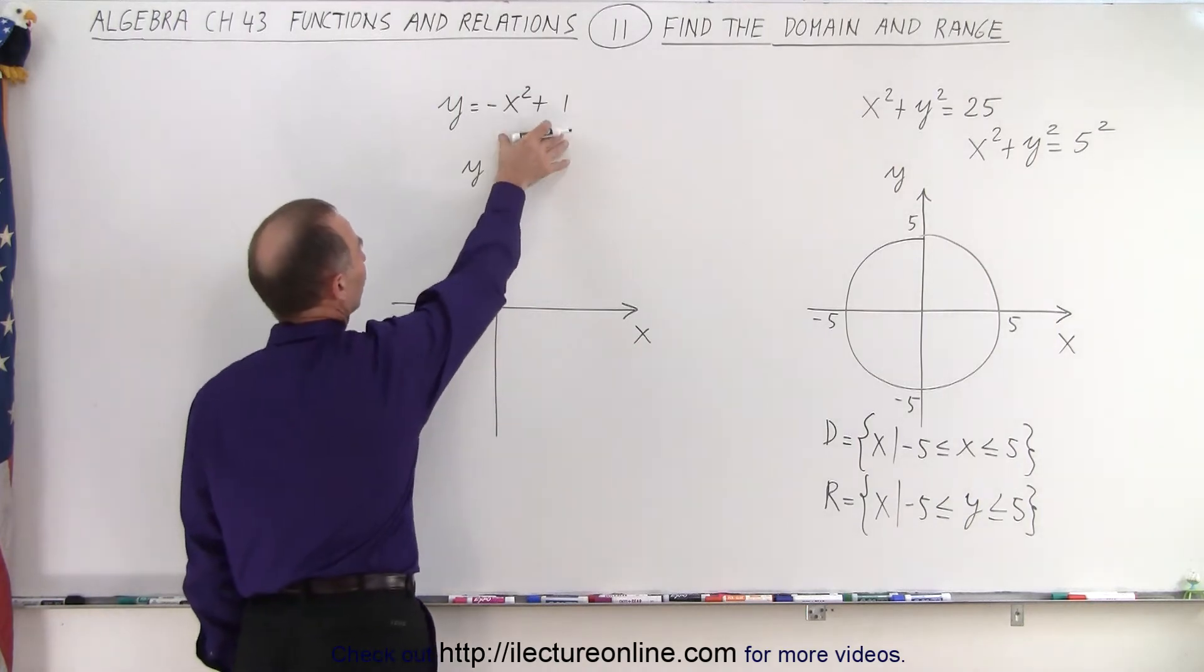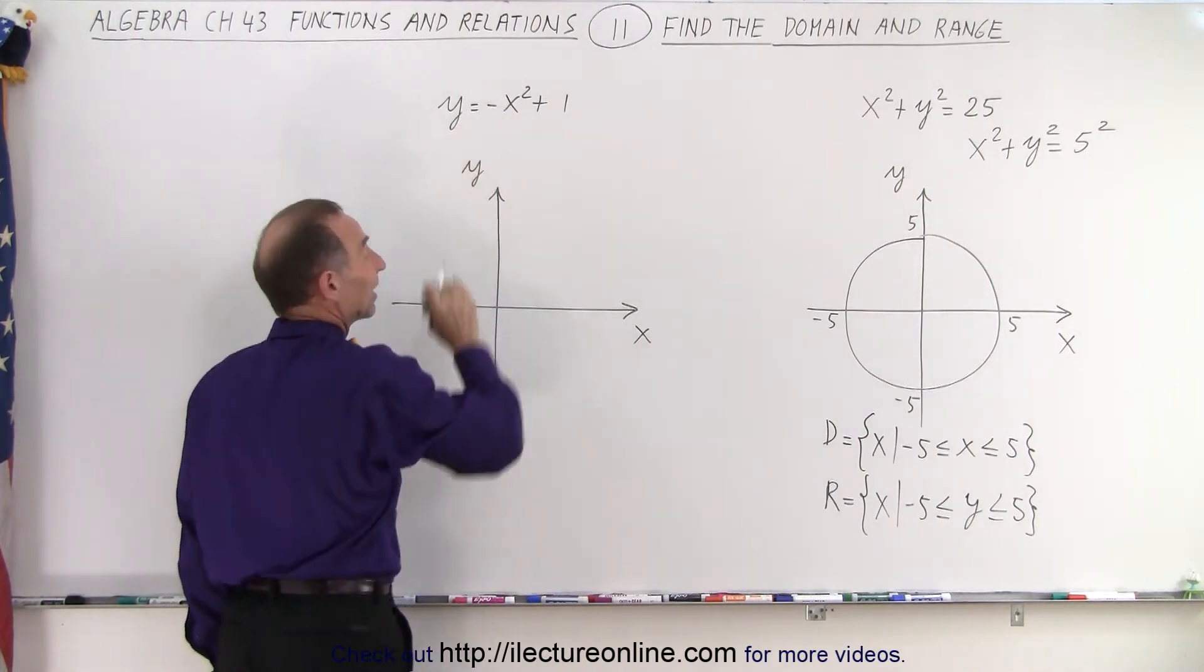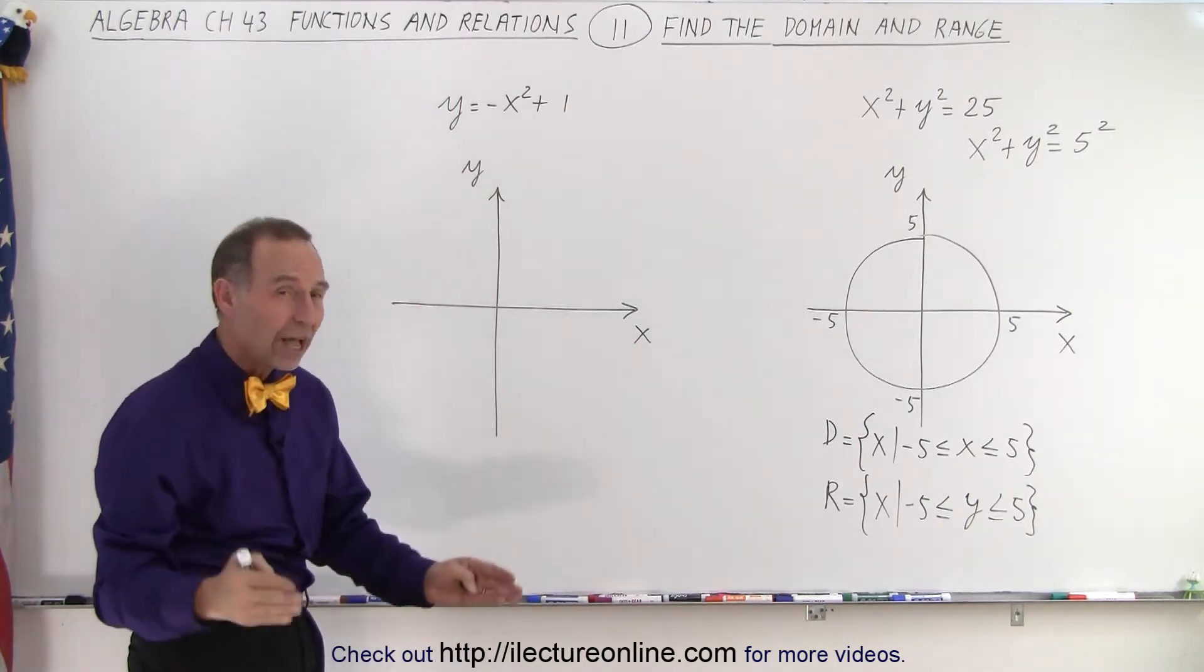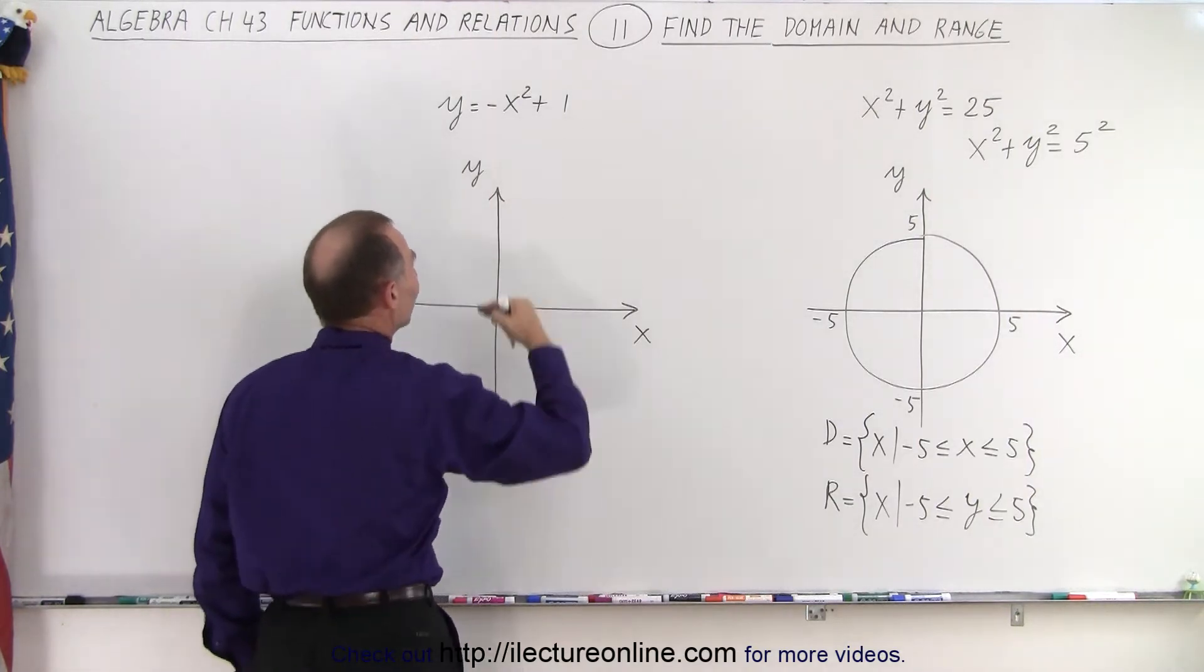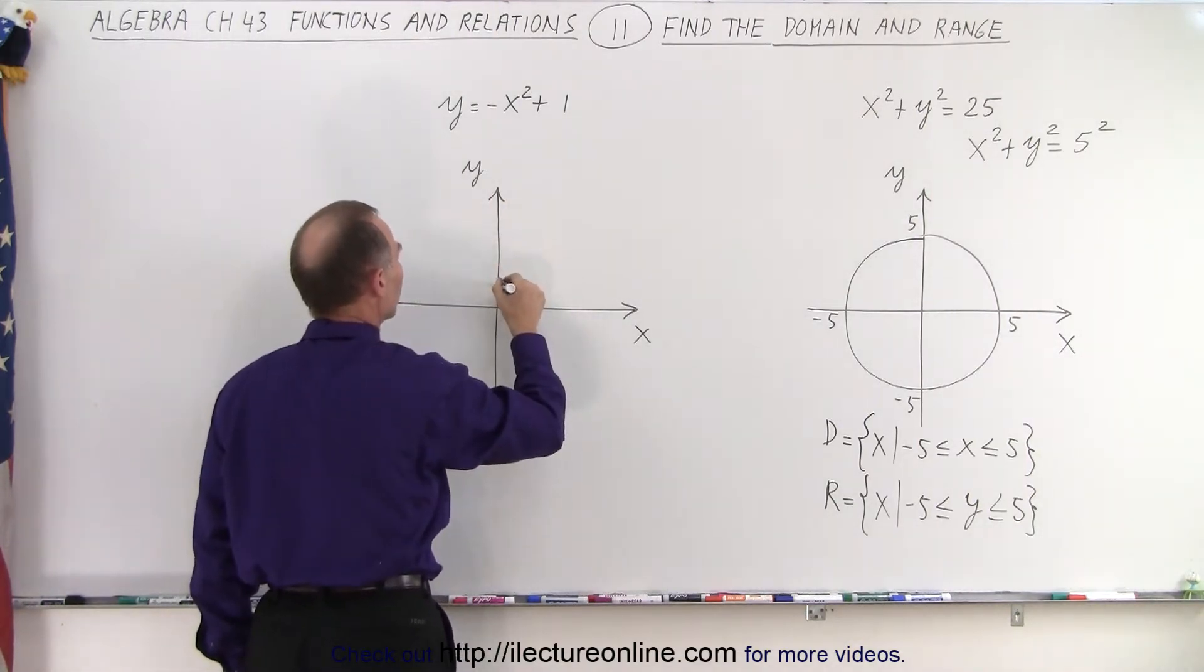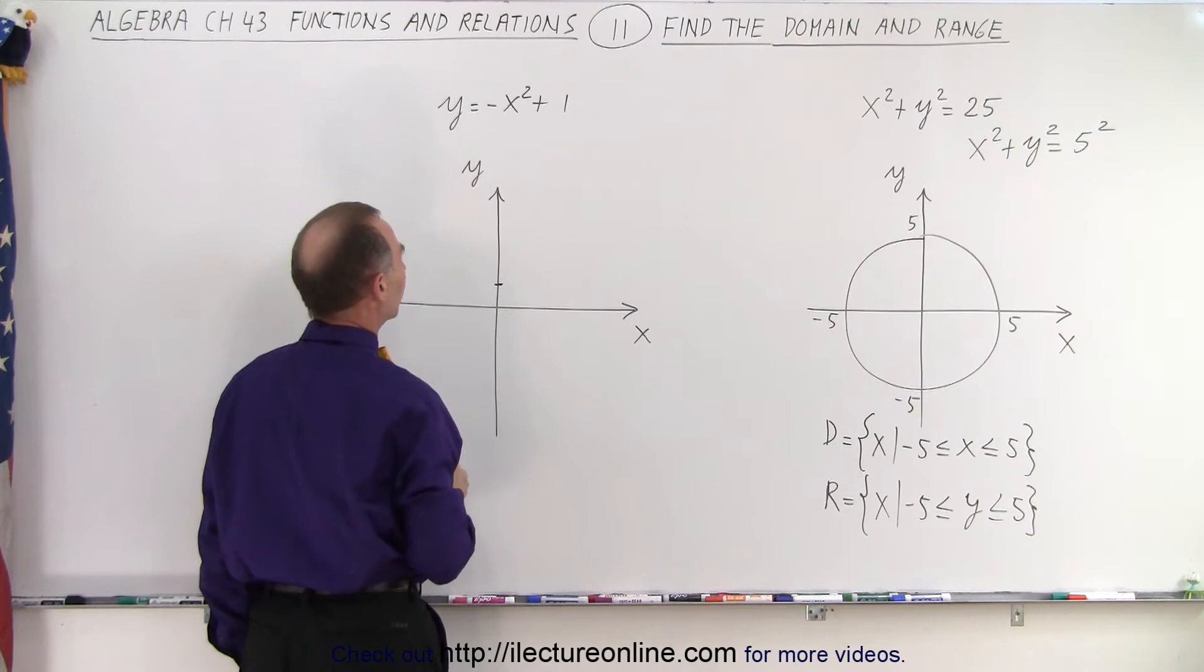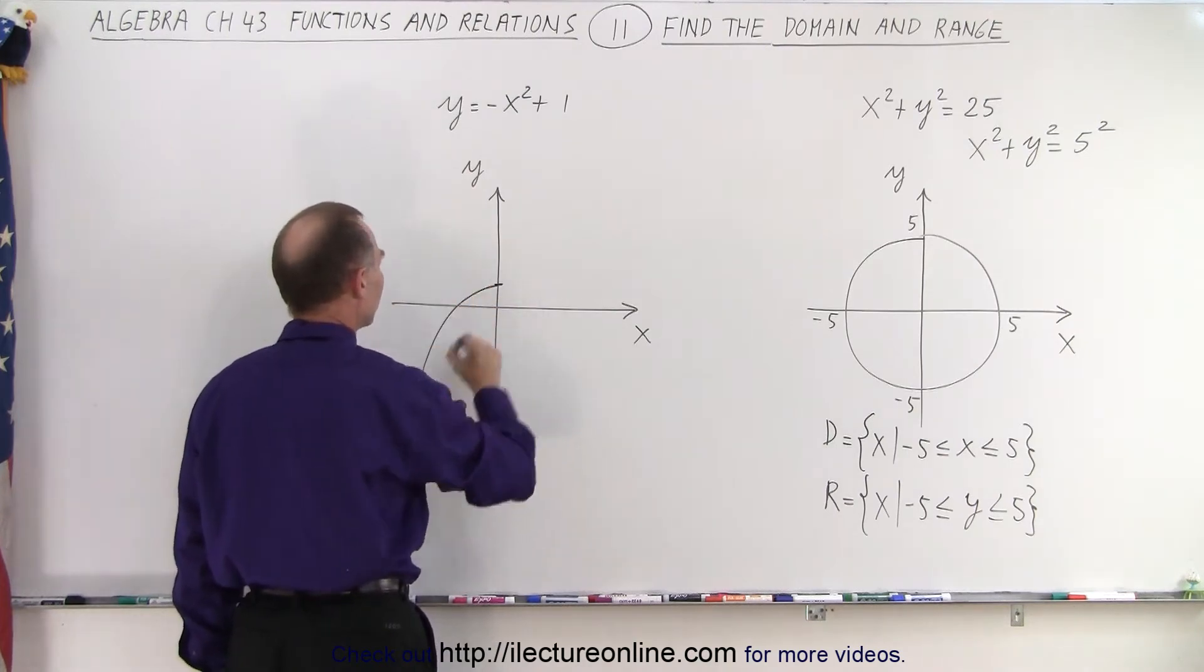Now let's go ahead and graph this function right here. Notice because the negative sign it's a parabola that opens downward and the plus 1 that means it's moved up by one unit. So the maximum value of the parabola is plus 1 and the parabola opens downward.